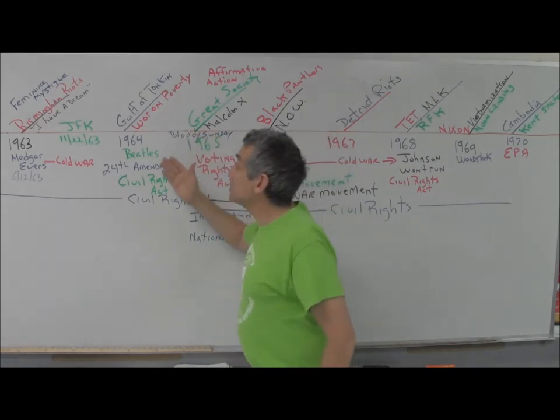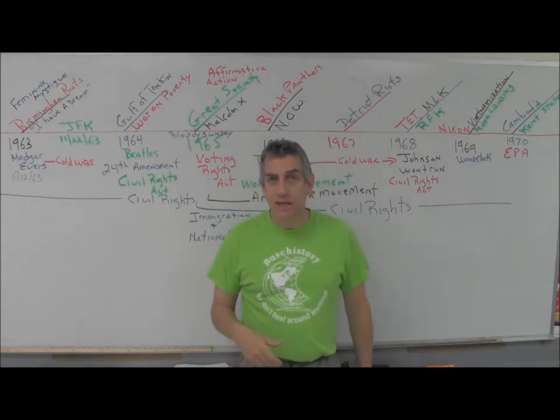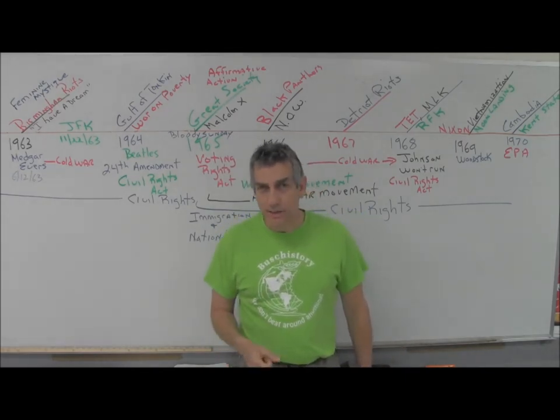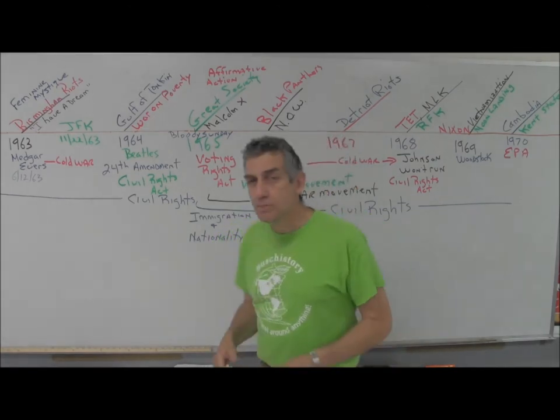The same year, Johnson announces the War on Poverty. He wants to eradicate poverty in the United States and connect that to his Great Society - his big push to become the second Franklin Roosevelt.